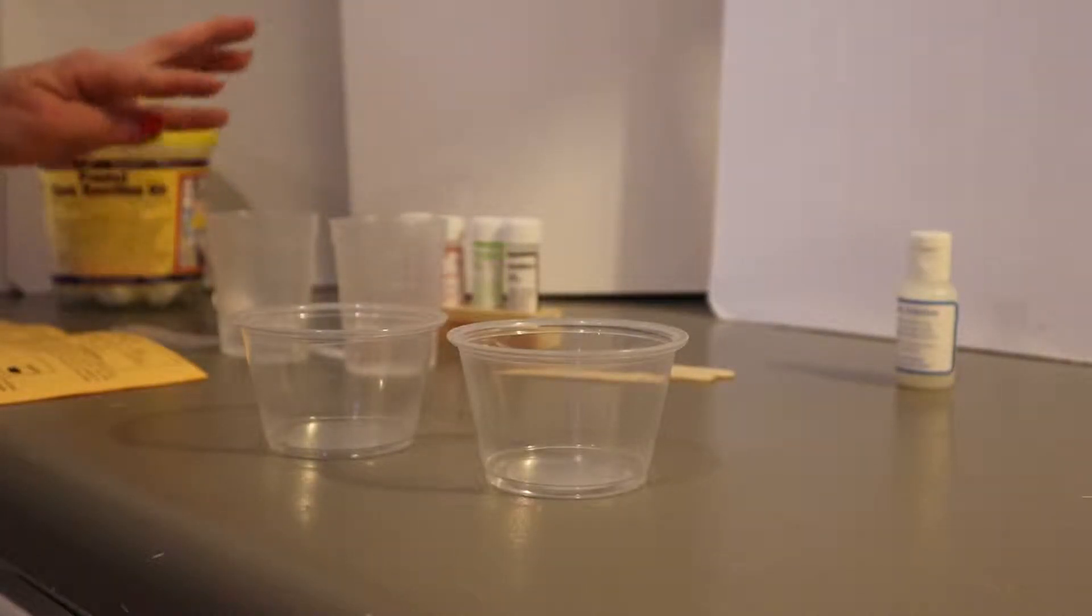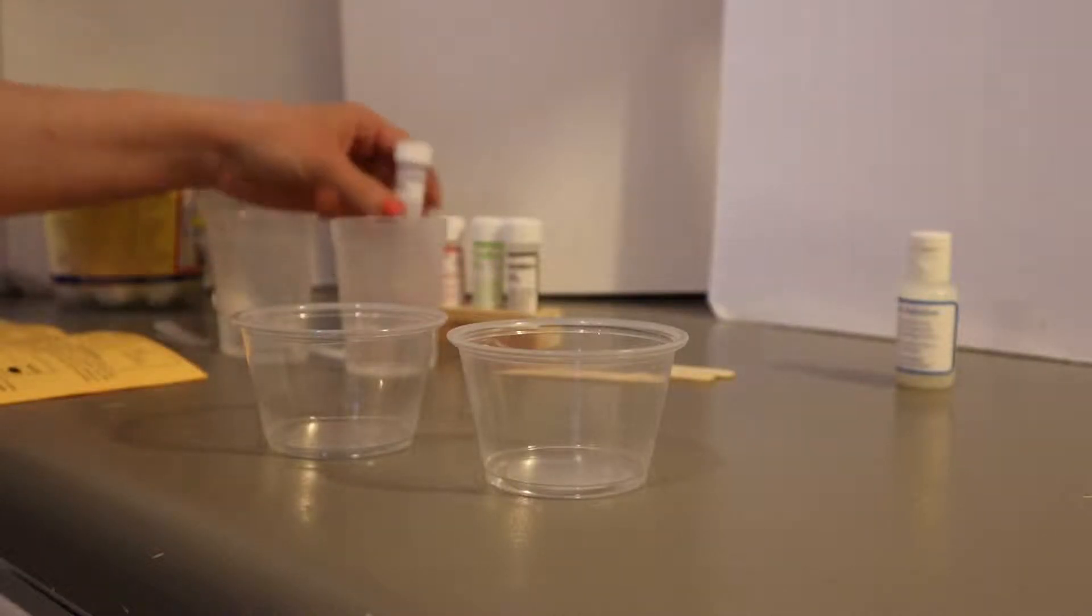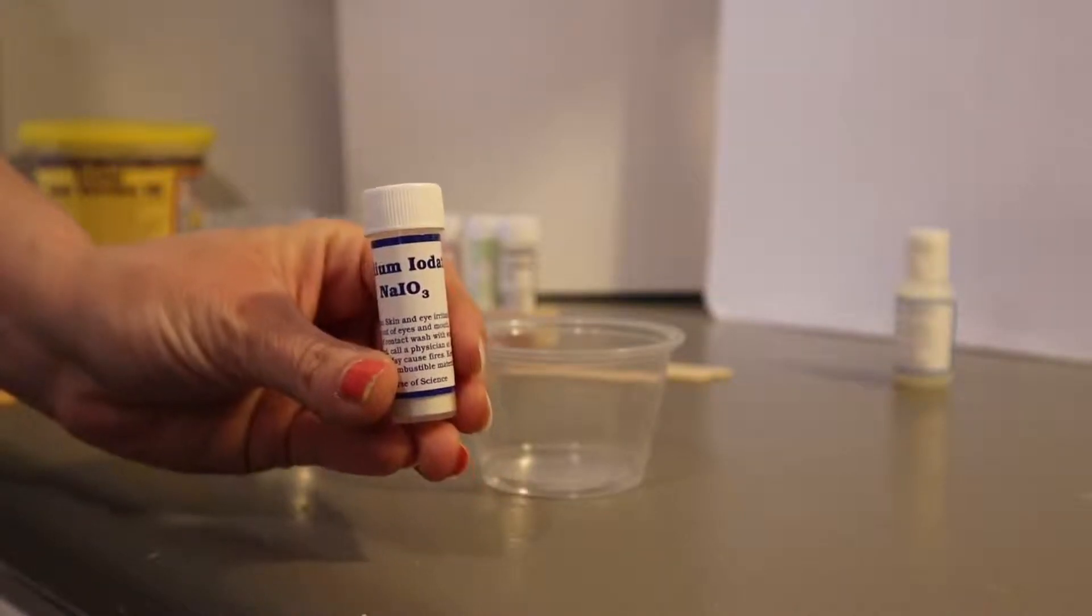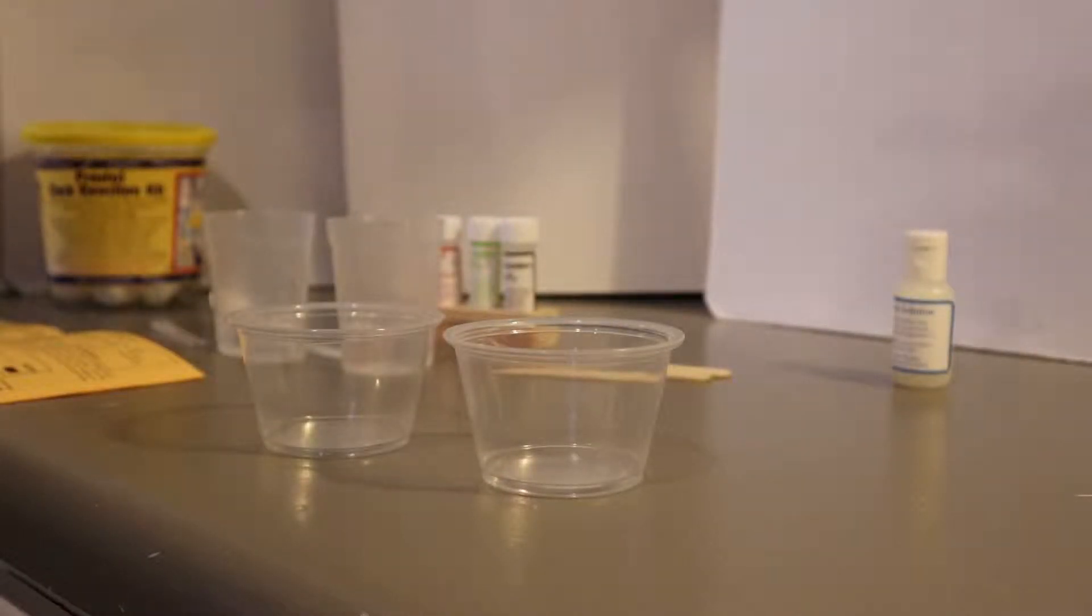And we've got 20 millimeters of water in both of these beakers. First beaker, beaker A, they want us to add one small scoop of sodium iodate.